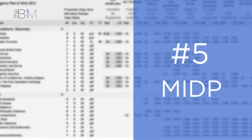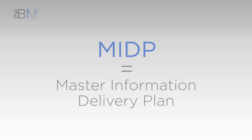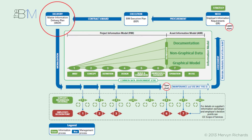In at number five is MIDP, which means Master Information Delivery Plan. That's a document developed from the BIM Execution Plan, setting out what information needs to be delivered, the format it should be delivered in, timescales, and who needs to produce it. Below an MIDP sit various Task Information Delivery Plans, which all feed into the master document.